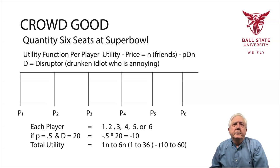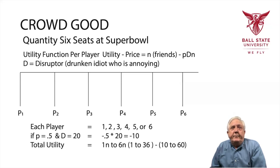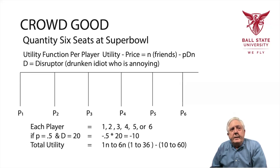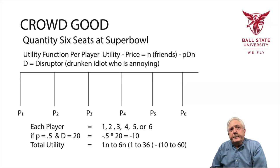But now let's suppose we change that a little bit and say there's a 50-50 chance we're going to get some jerk like this right in front of us, and the cost is going to be 20. That's 0.5 times 20, equal to minus 10 — and you have to multiply that times N. So the value to the group is 1 to 36, but the cost is going to be somewhere between 10 and 60. Chances are you're not going to want to go to the Super Bowl next year, or maybe ever again.